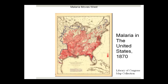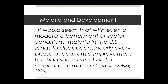Similarly, in the United States, as Acronek has pointed out, malaria disappeared from the upper Mississippi Valley largely as a result of improved economic betterment. M.A. Barber noted: 'It would seem that even a moderate betterment of social conditions, malaria in the U.S. tends to disappear. Nearly every phase of economic improvement has had some effect on the reduction.' Barber was actively involved in vector control in the southern United States.